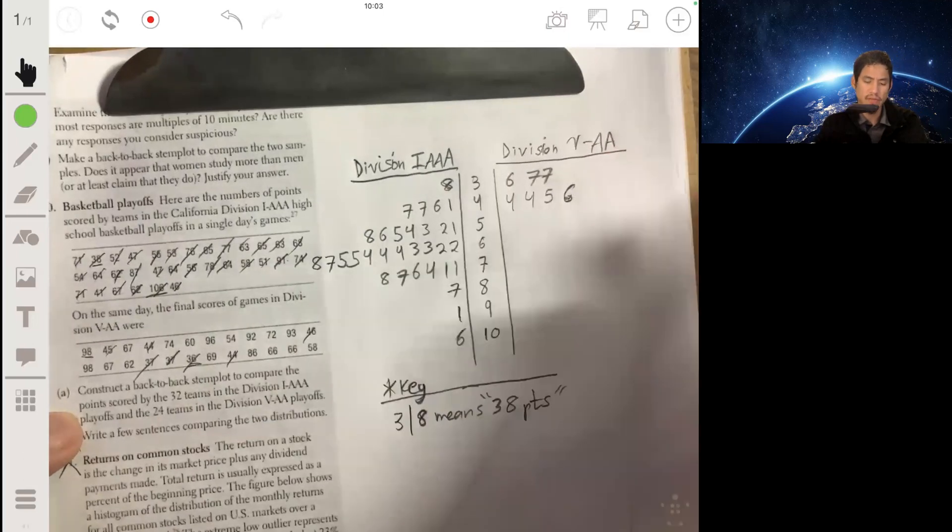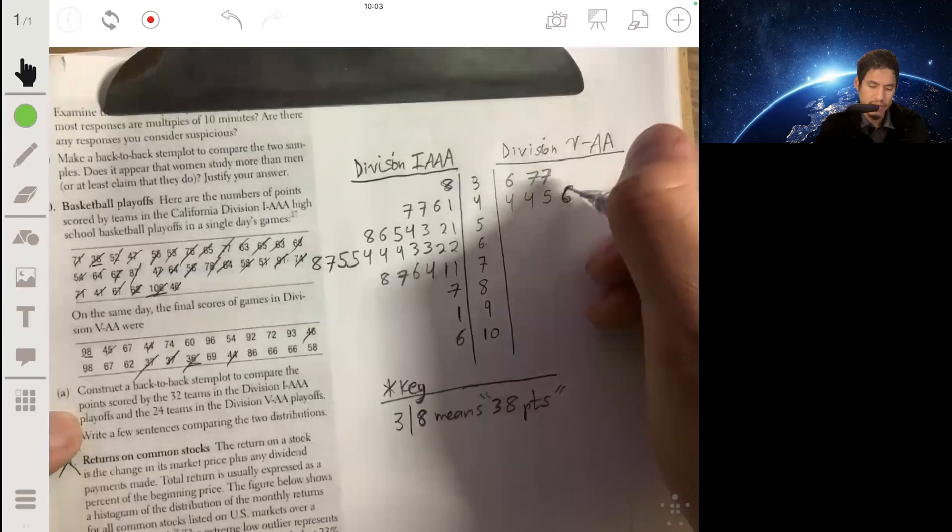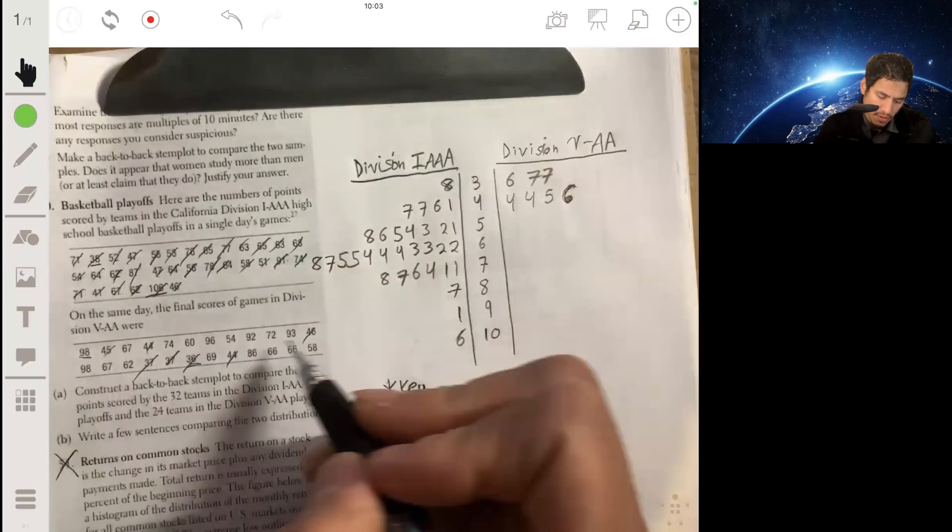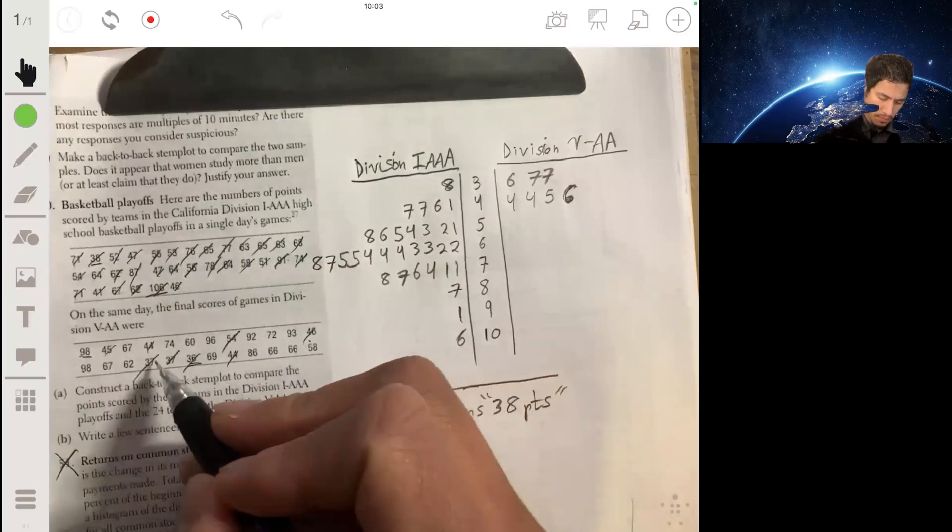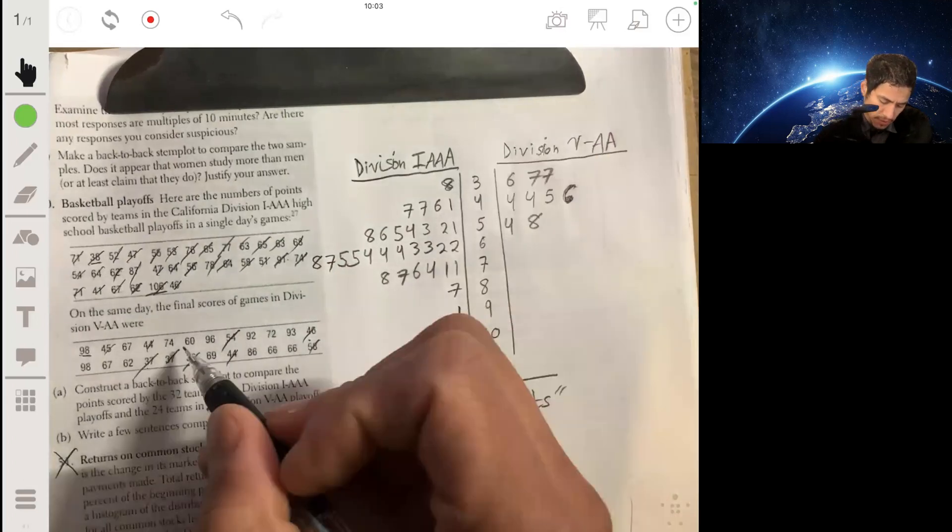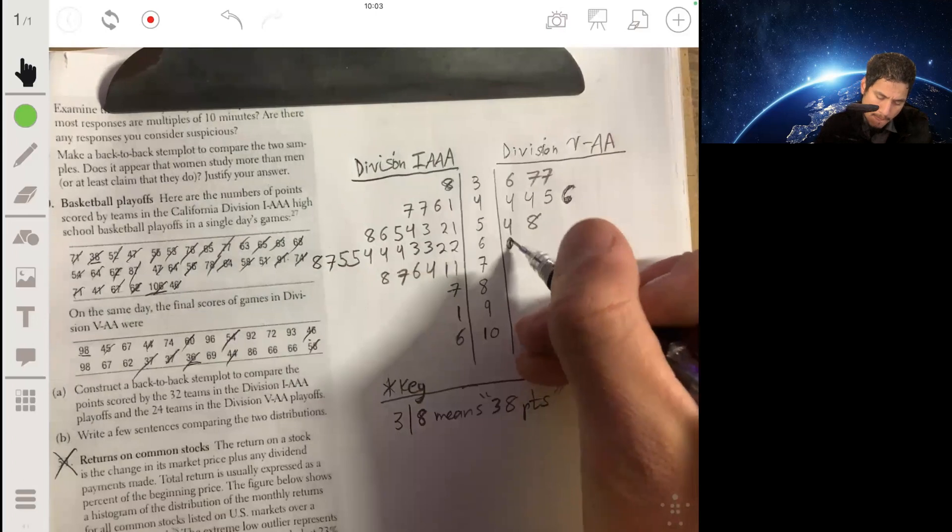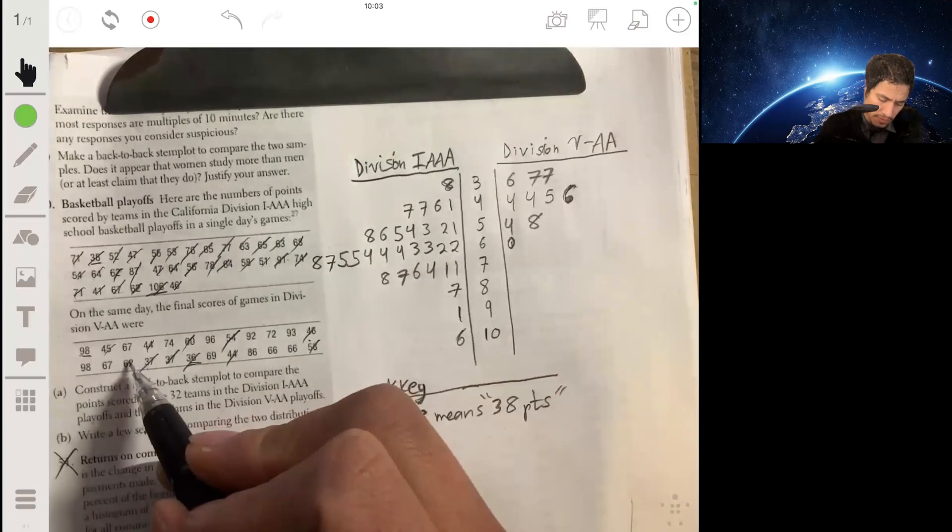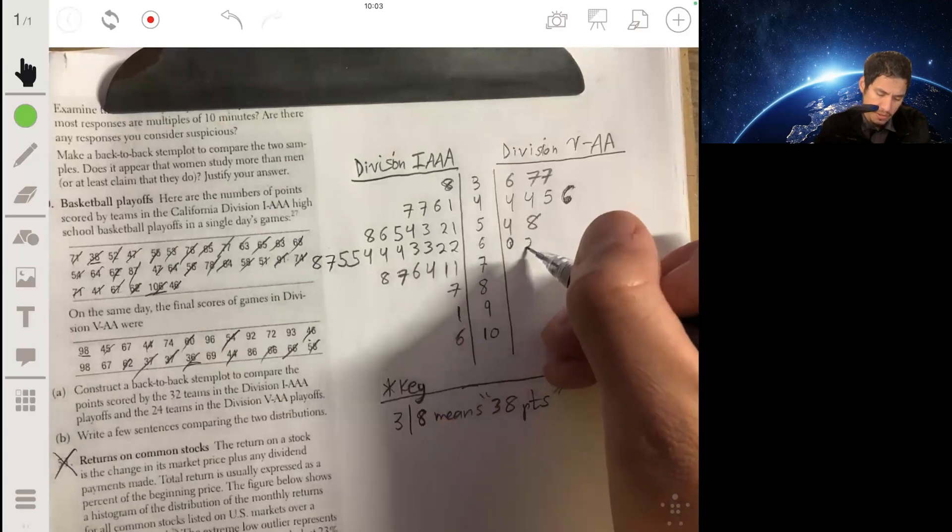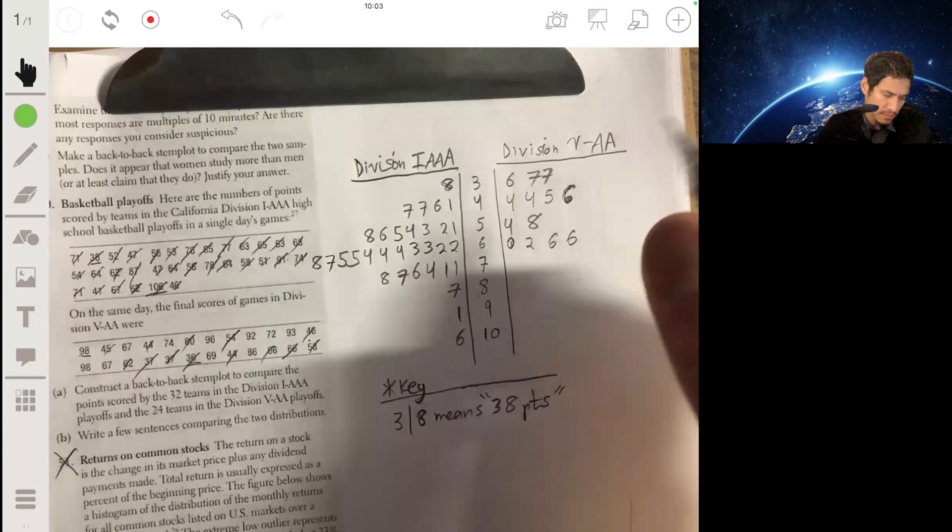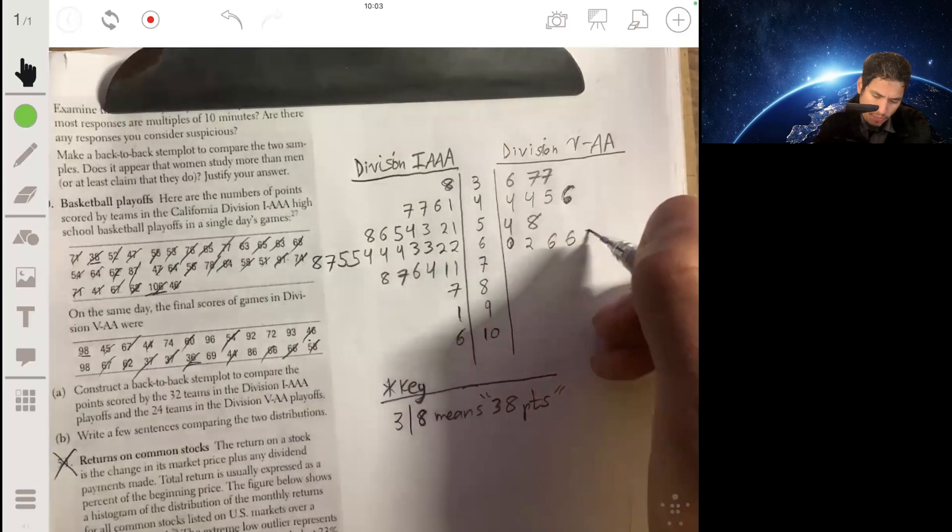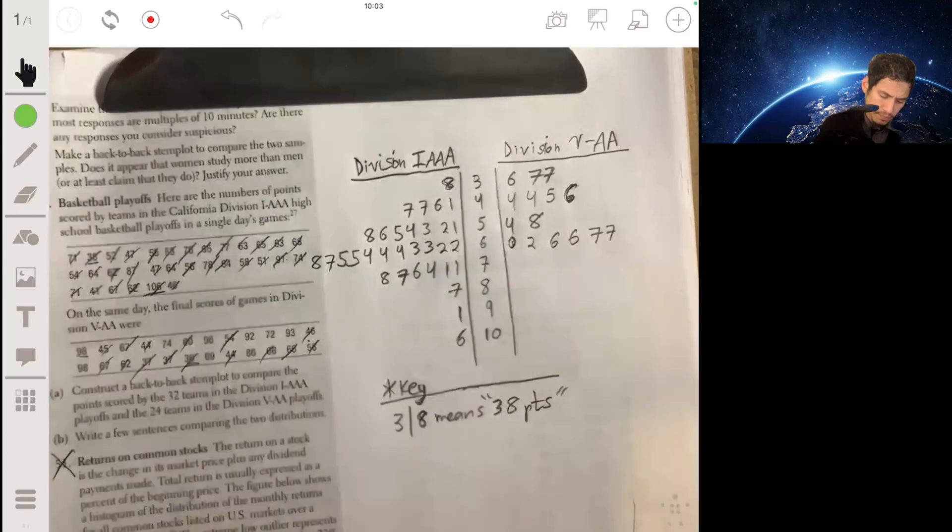Always try to keep the leaves lined up, just do your best. Sometimes obviously some numbers will take more space than others, just try to keep it organized. 50s: we have 54, 58. 60s: have a 60 there, two 66s and two 67s. Anything else? Oh, 69.